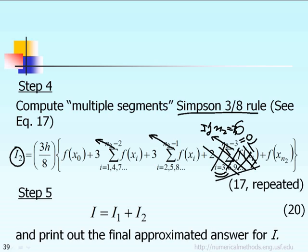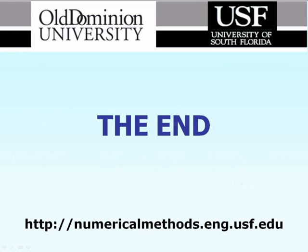Finally, Step 5: You add the summation I = I₁ + I₂. This I₁ comes from Simpson 1/3 rule and I₂ comes from Simpson 3/8 rule. That's the end of the lecture.